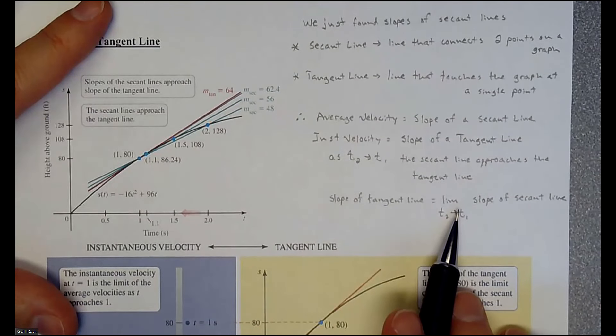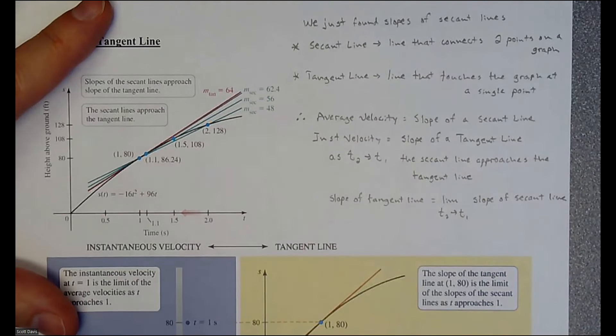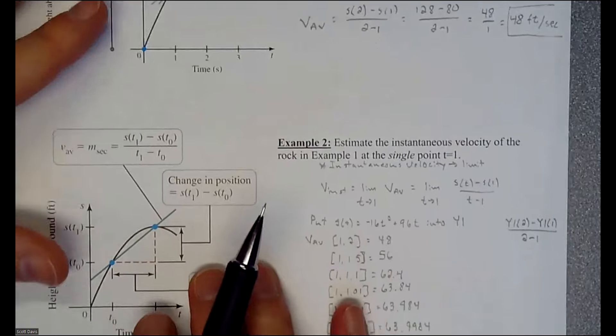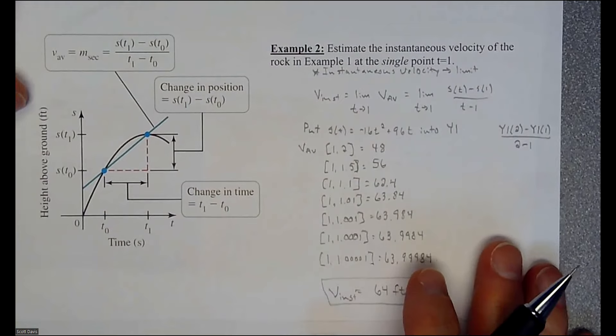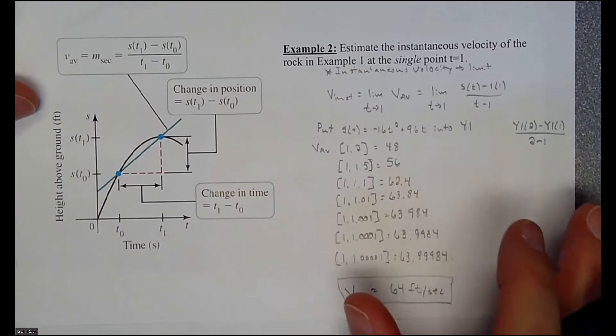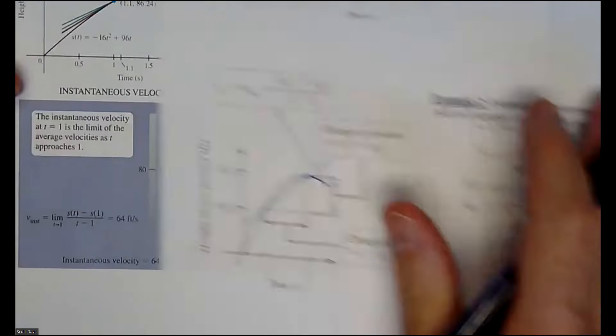So it becomes a limit. And as of right now, the only way we have to figure out that slope is to plug a bunch of values. Eventually we'll learn some calc that will ease this pain here a little bit.